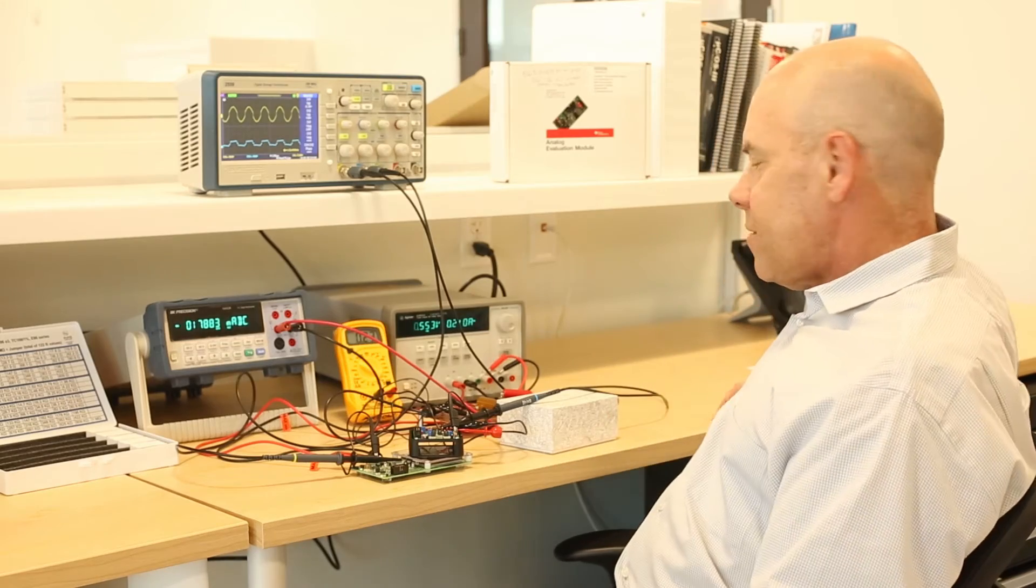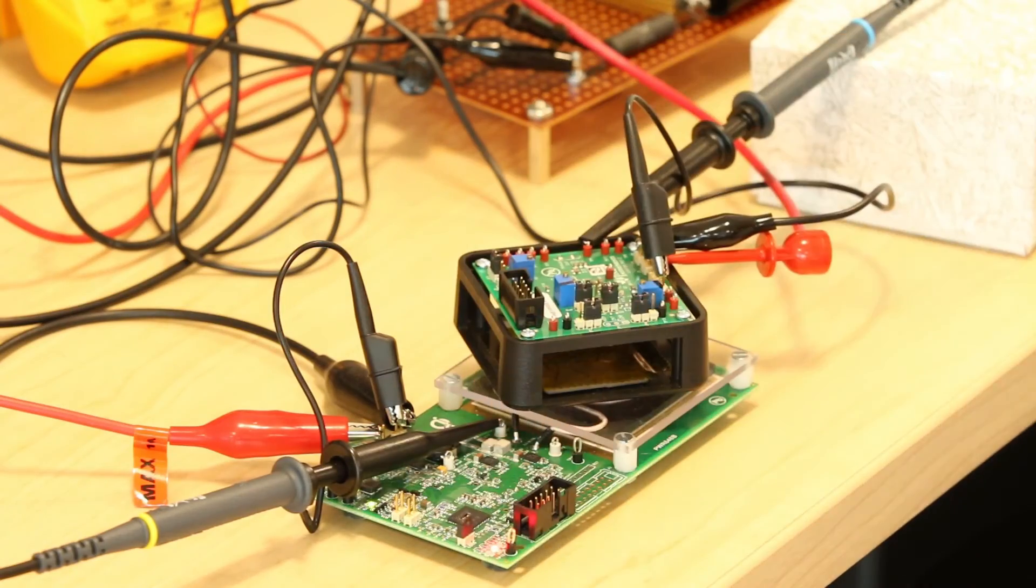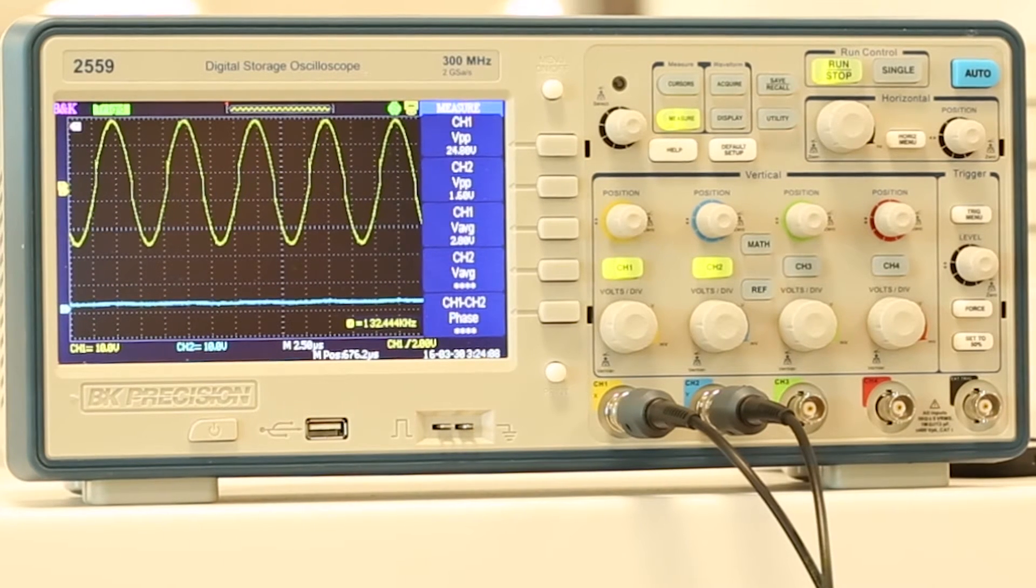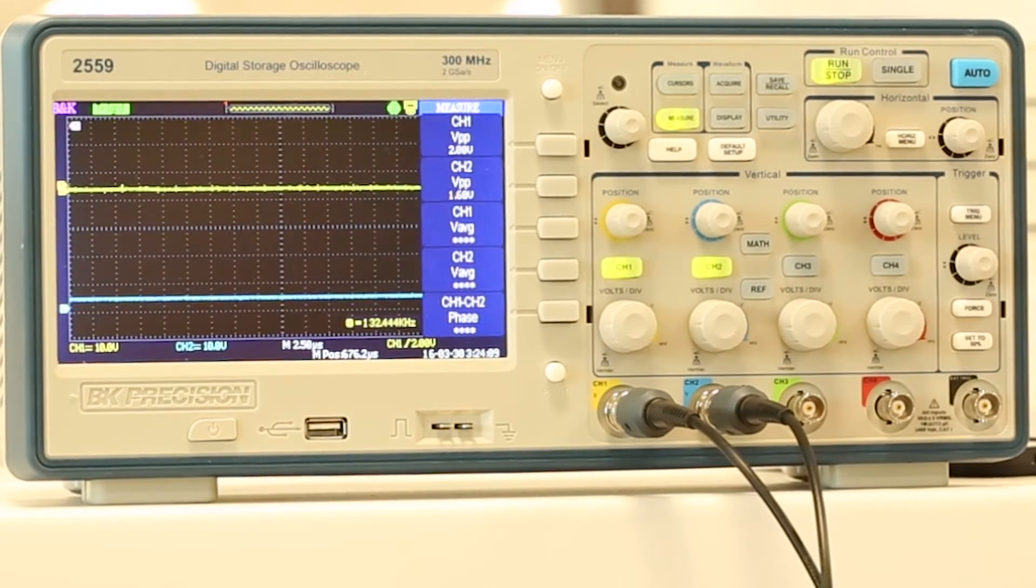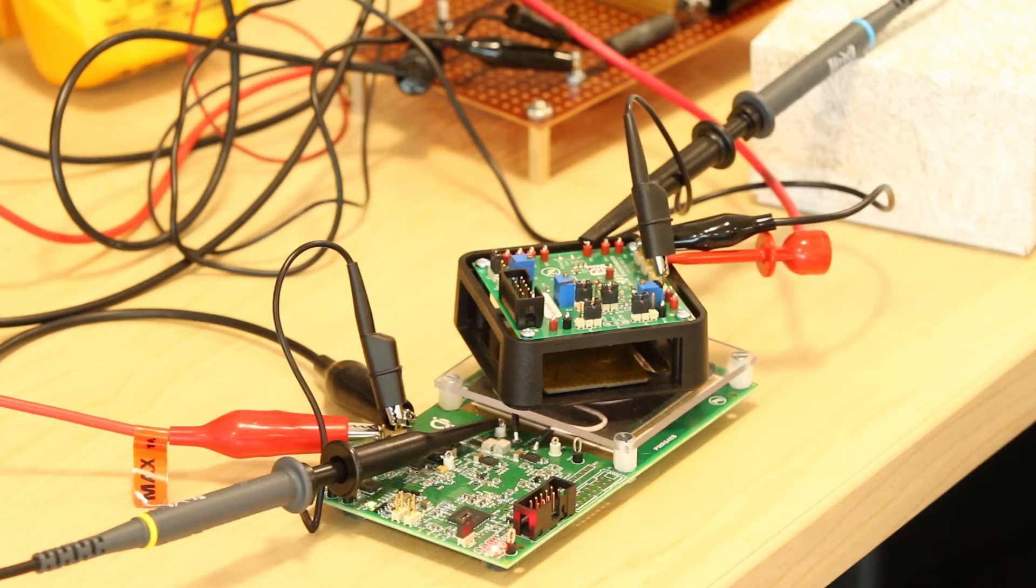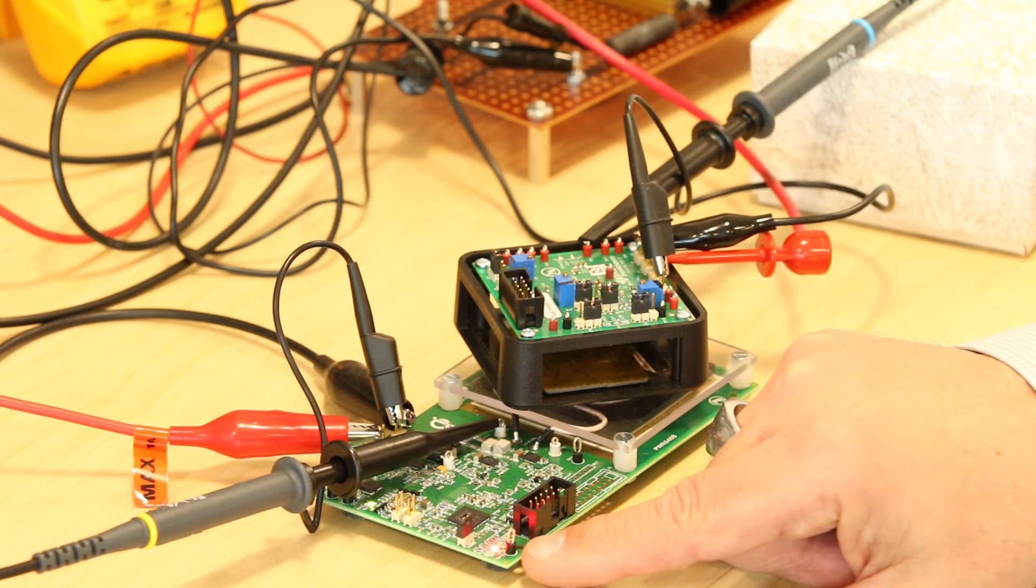Now let's see what happens when a foreign object is inserted between the receiver and the transmitter. We'll use this quarter. The receiver is communicating with the transmitter, telling it how much power is being received. The transmitter compares this with the power transmitted. If there's a big difference, it determines a foreign object is present and it terminates the power transfer. This can take about 10 seconds. As you can see by the red LED on the eval board, the quarter has been detected.